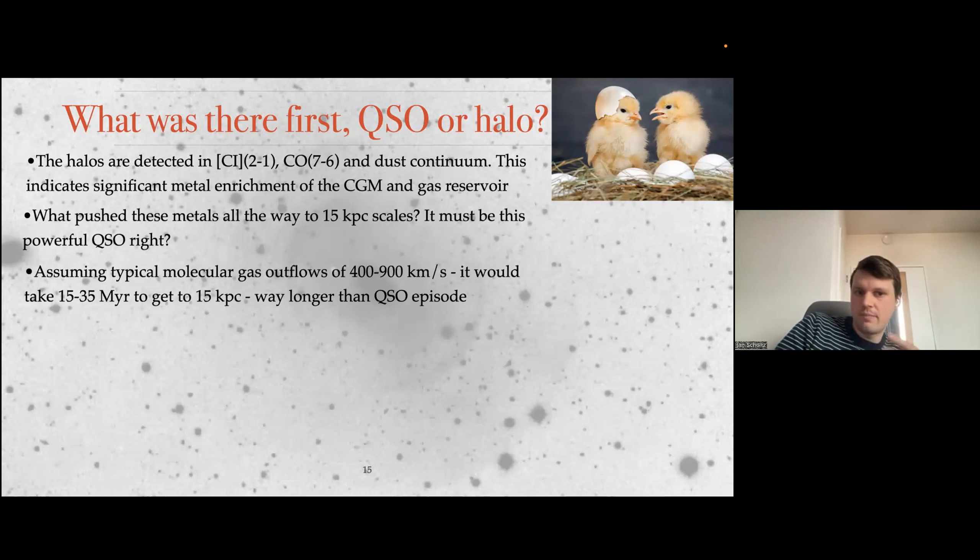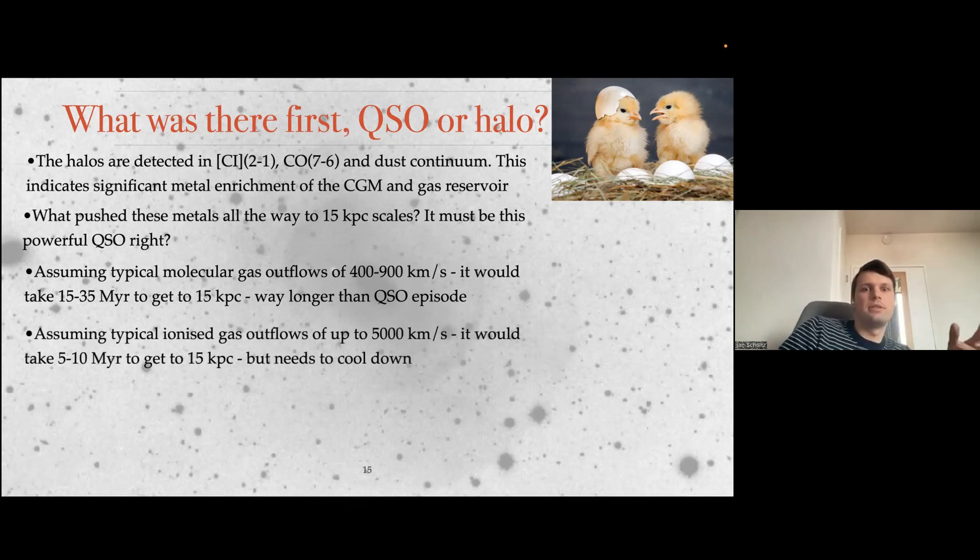But was it the quasar that pushed it to 15 kiloparsec? Well, assuming typical molecular gas outflows that would be of 900 kilometers per second what we see in some quasars, it would take 15 to 35 million years to get to 15 kiloparsec. That's way more than quasar episodes. Quasar episodes or AGN episodes last around 1 to 5 million years. If you would say you have the ionized gas outflows, so you can get there with a speed up to 5,000 kilometers per second, that would take around 5 to 10 million years. It would need to cool down from roughly 10,000 Kelvin to 150 Kelvin. Gas can cool very quickly, so that is doable, but just on the edge.